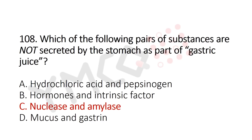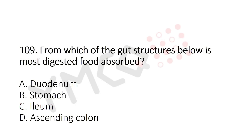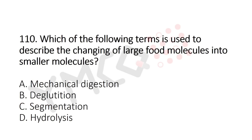Now Question 109: From which of the gut structures below is most digested food absorbed? Option A: duodenum, Option B: stomach, Option C: ileum, Option D: ascending colon. The answer is Option C: ileum.